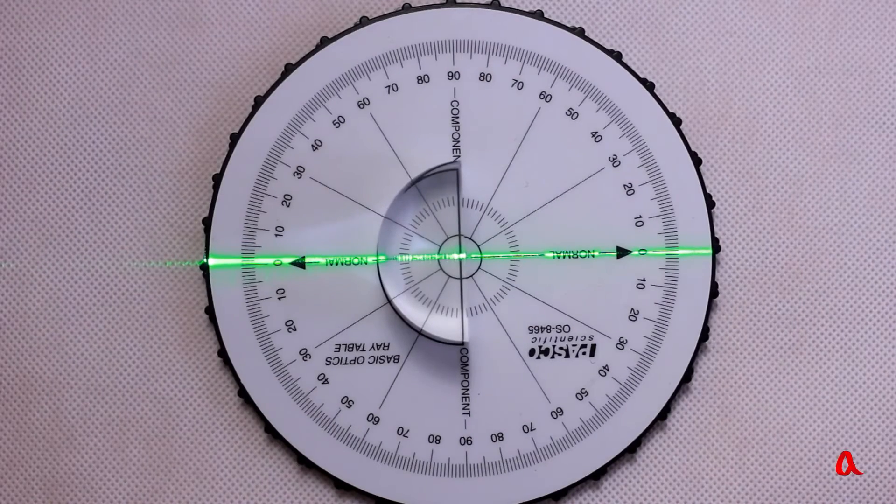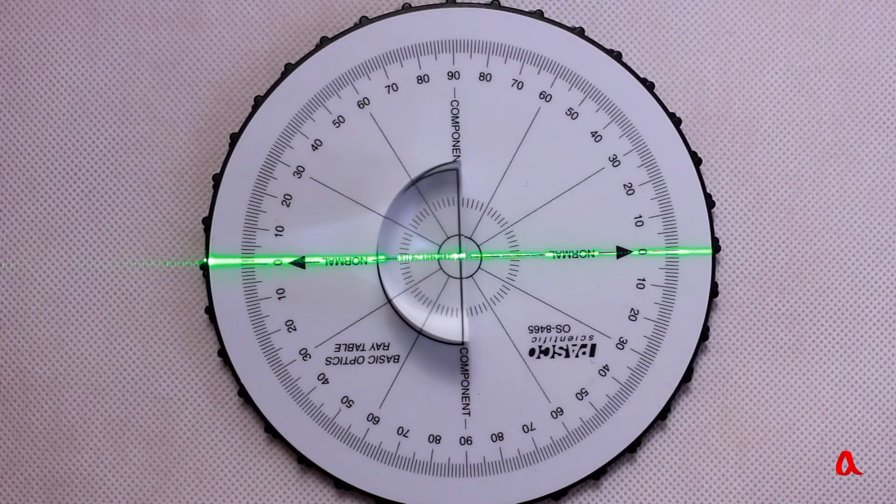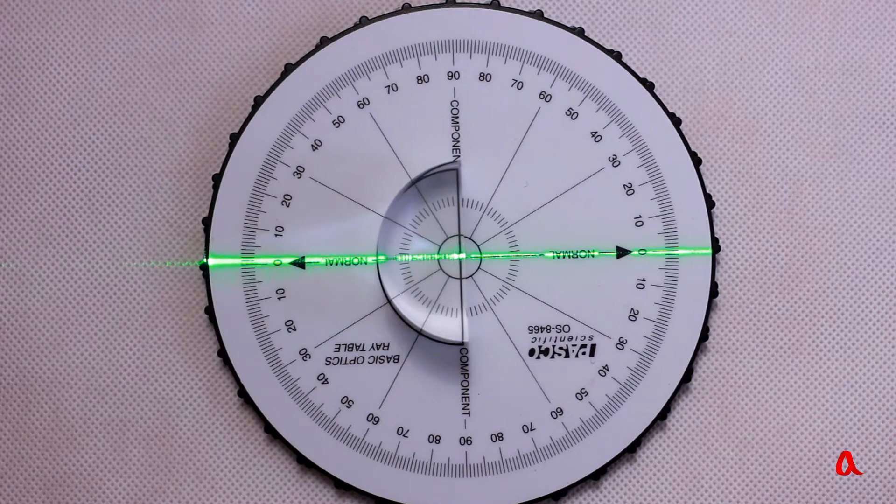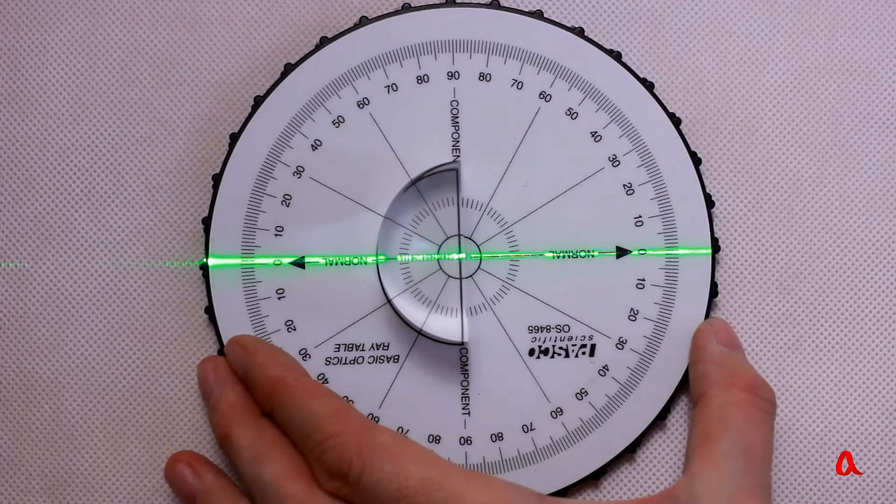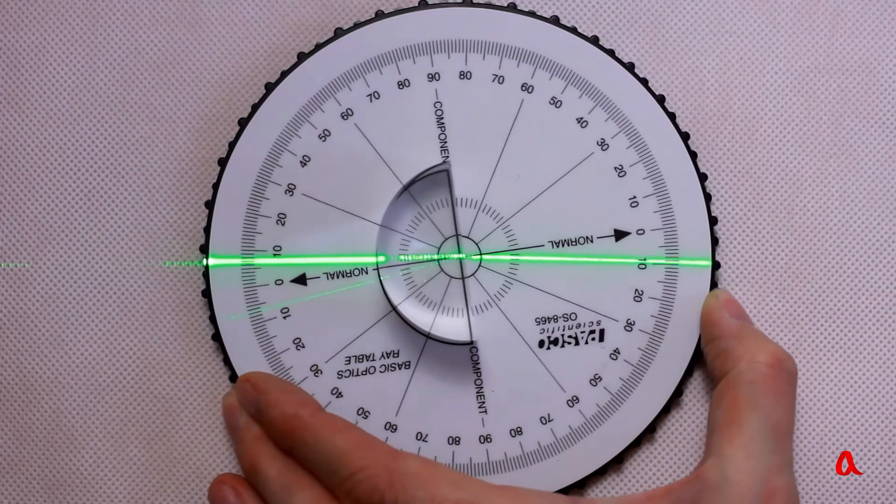Let's make a similar experiment with a semicircular collar on a rotating plate. When the beam emerges from plexiglass into the air, the angle of refraction will be wider than the angle of incidence.